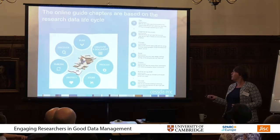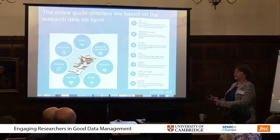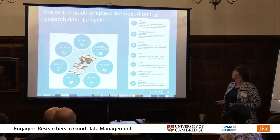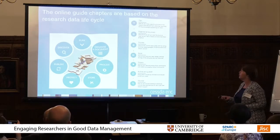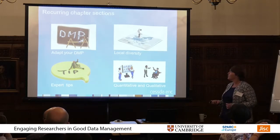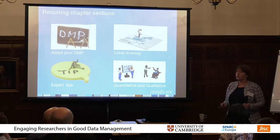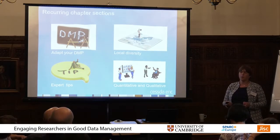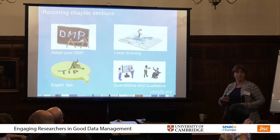We came up with this cycle structure because it's linked to the topics we wanted to address — starting with planning: what should be included in organising and documenting your data. One recurring chapter section covers local diversity, including information from different countries. For example, how is the GDPR — which is coming up — handled within Austria? How is it handled in the UK? And so on.